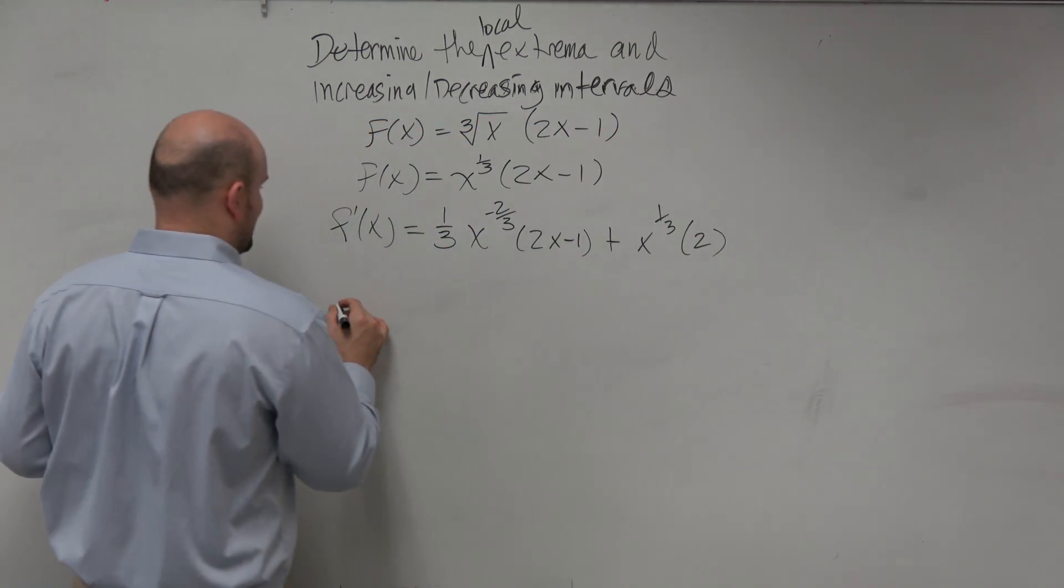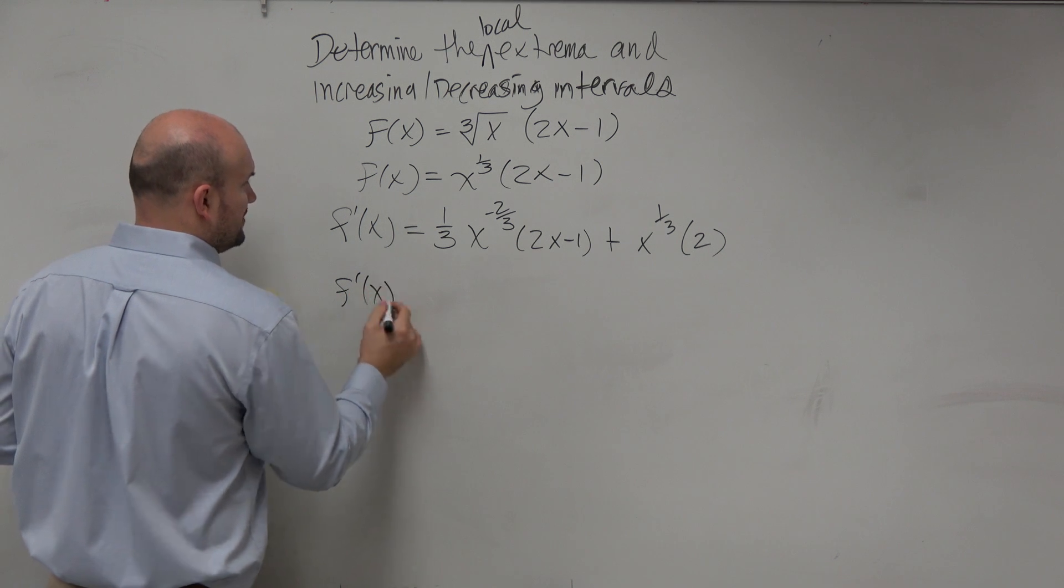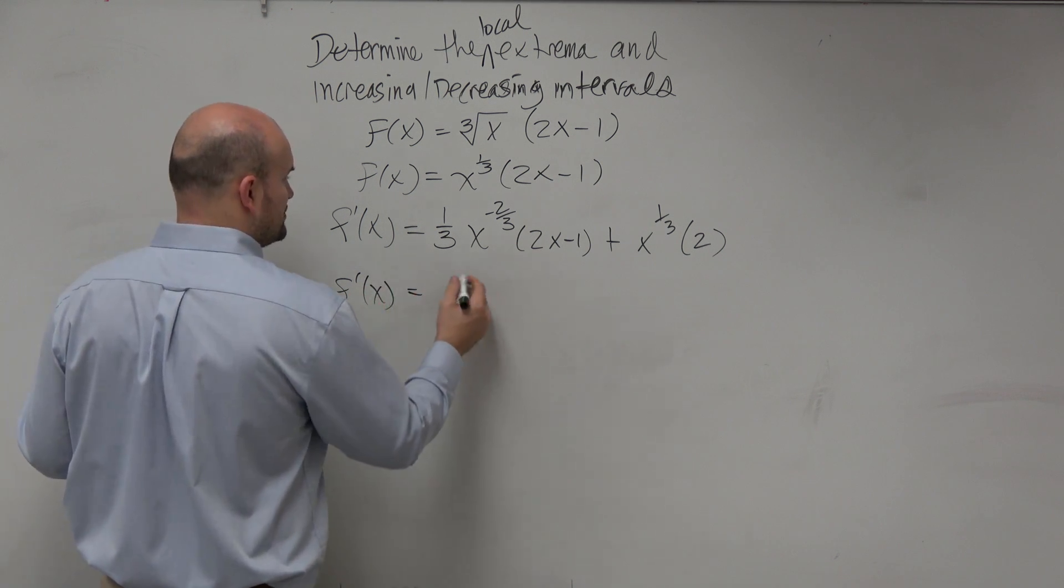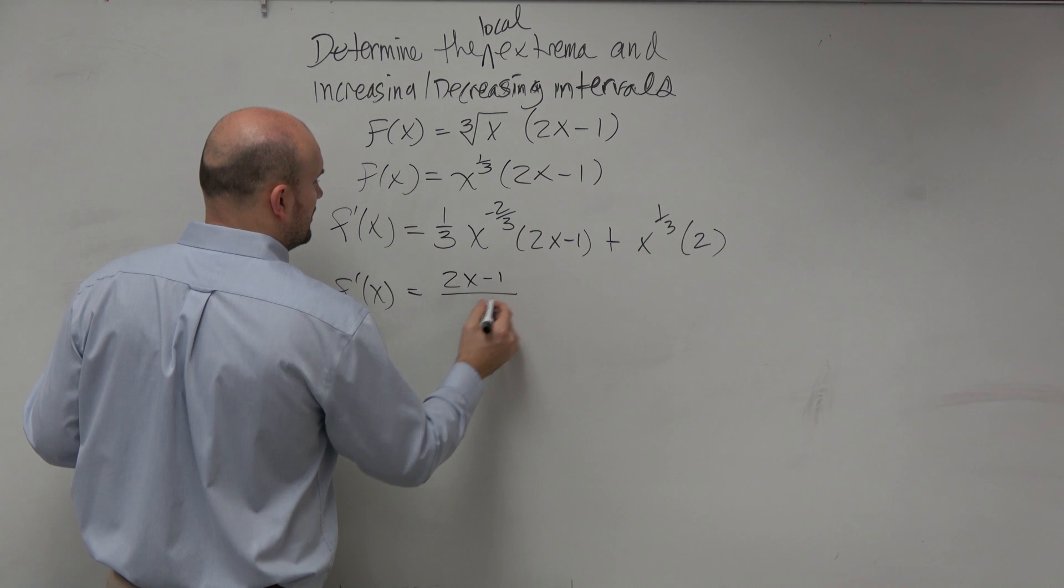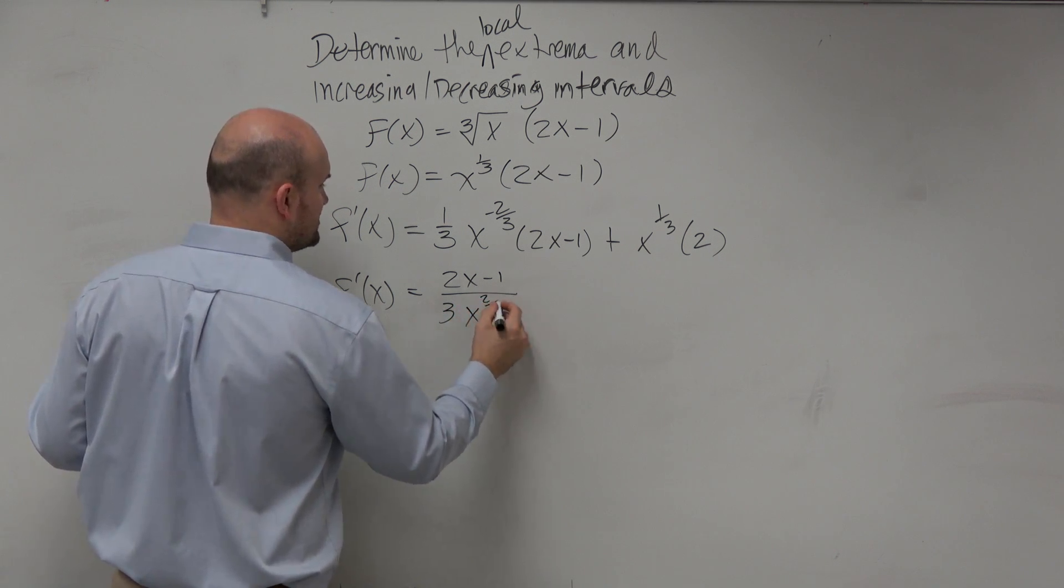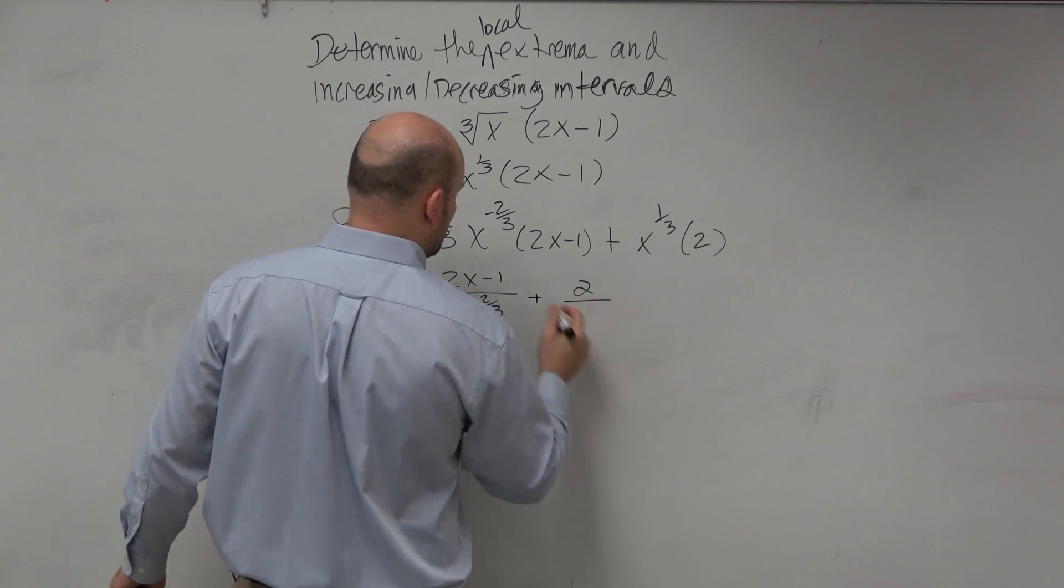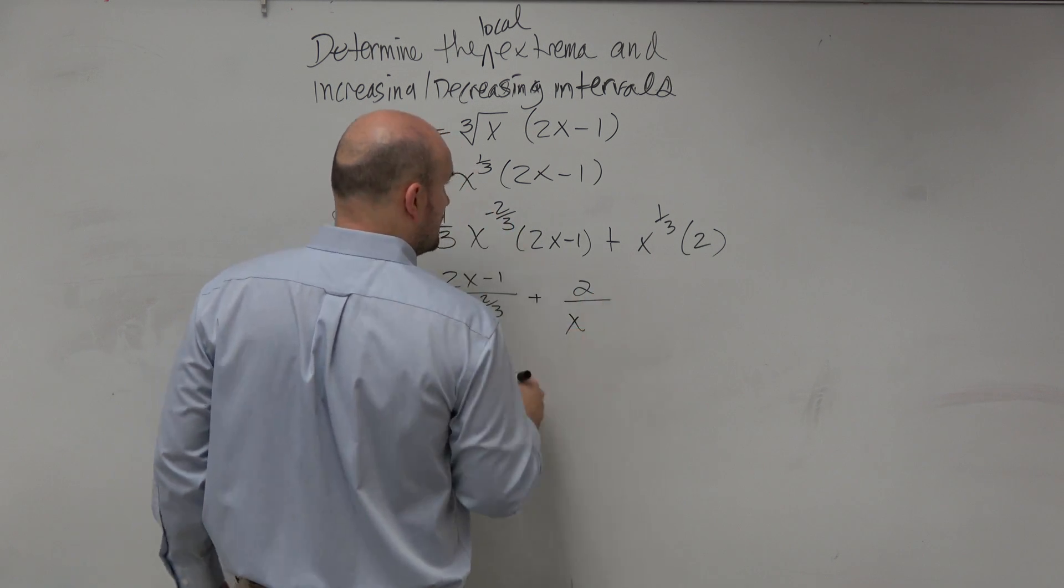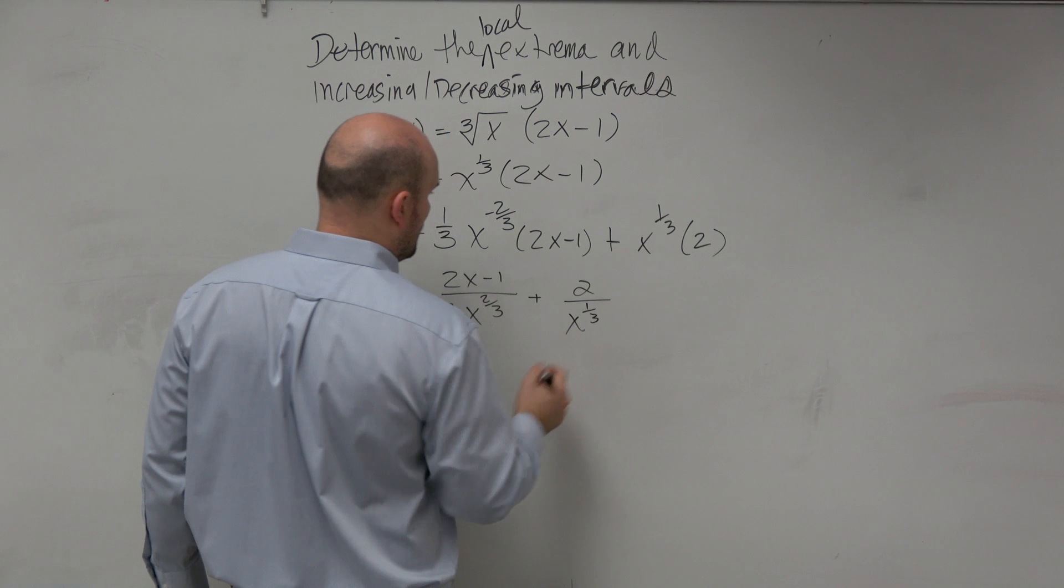And then, obviously, I can rewrite these as common denominator. So I'd have (2x - 1) over (3 times x^(2/3)) plus 2 over x^(1/3).